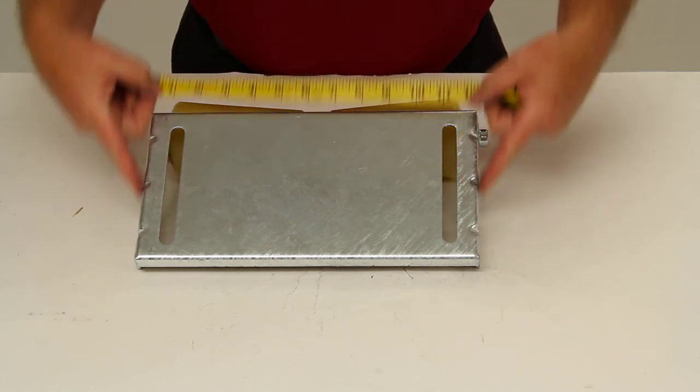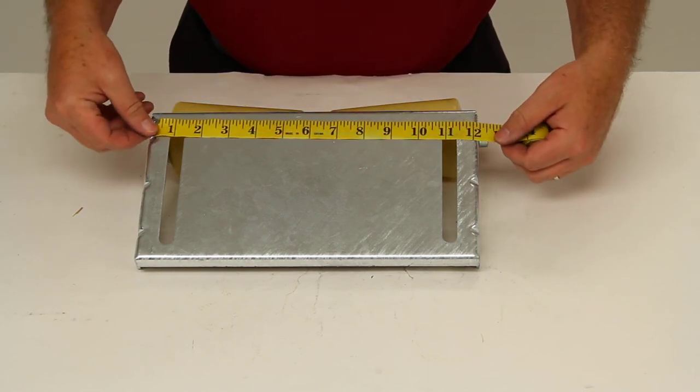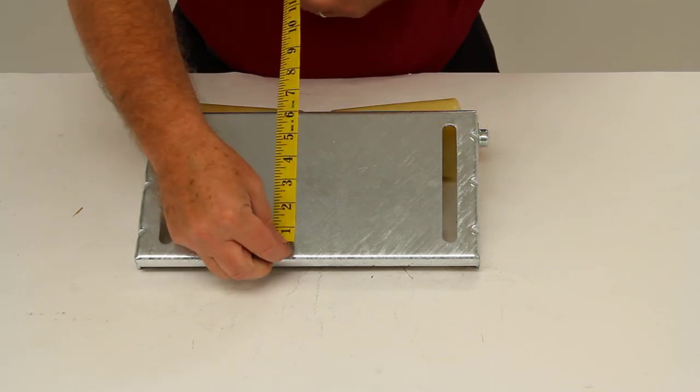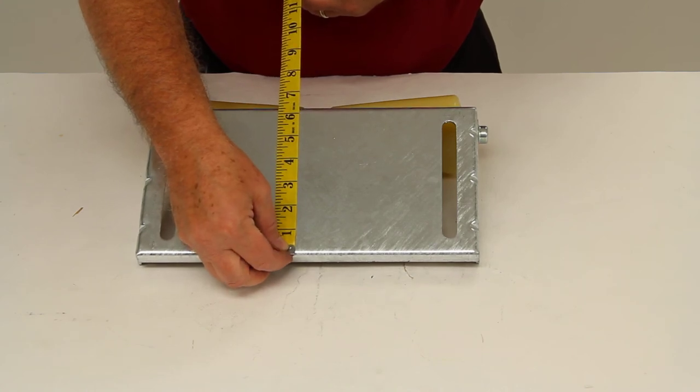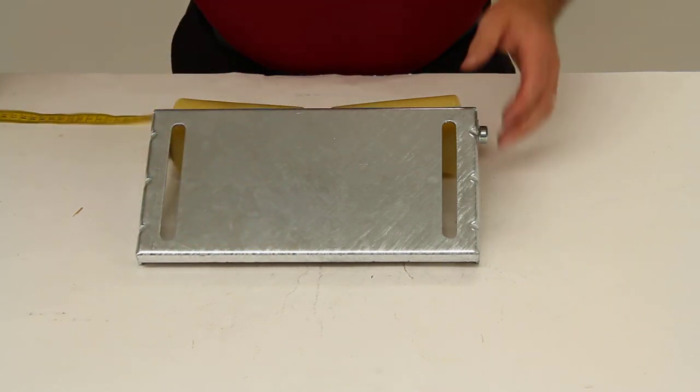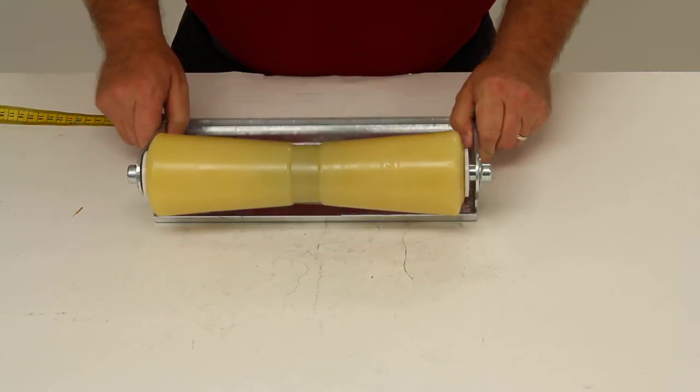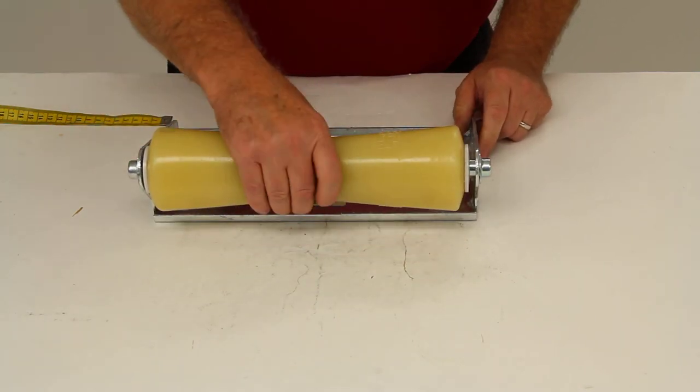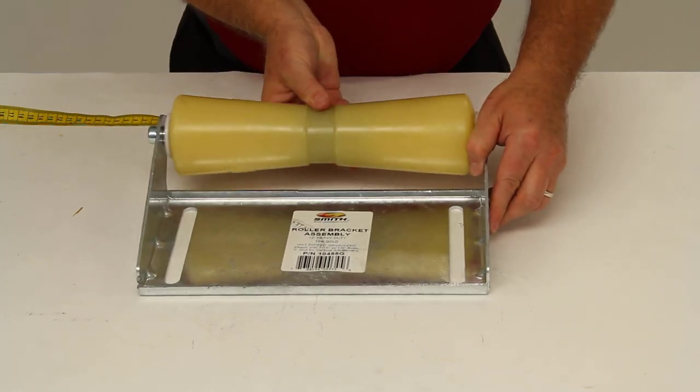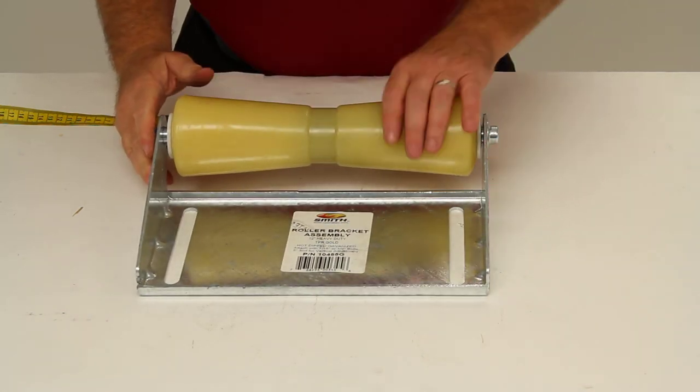And the overall size of the whole bracket is going to be 12 inches by about 6 1/4 inches. And again, this part is made in the USA. And that should do it for a review on part number CE10455G.